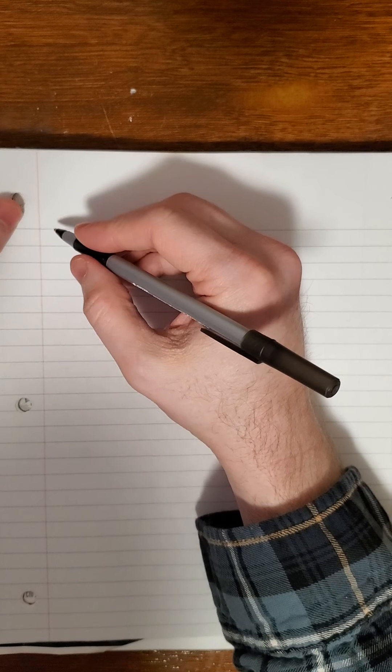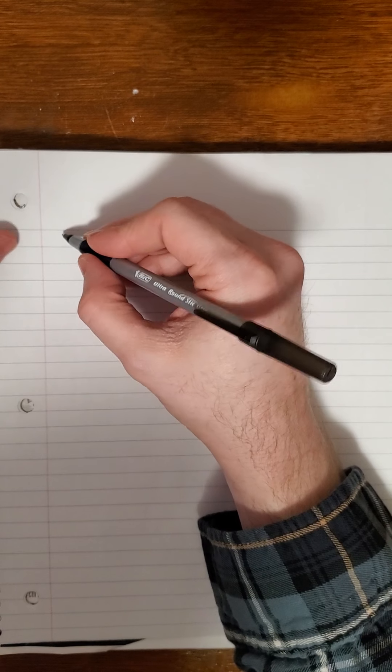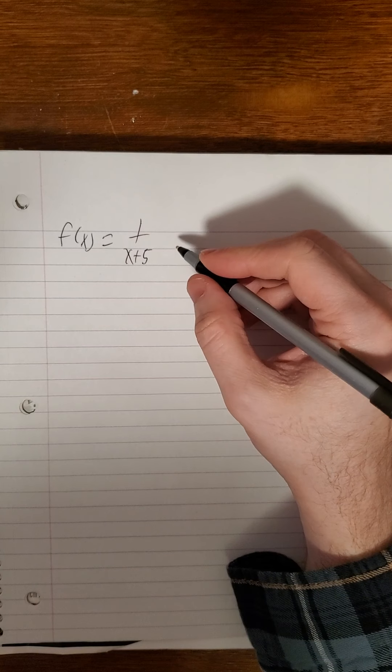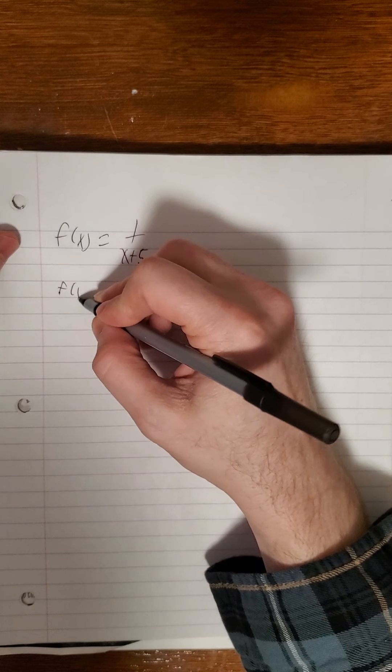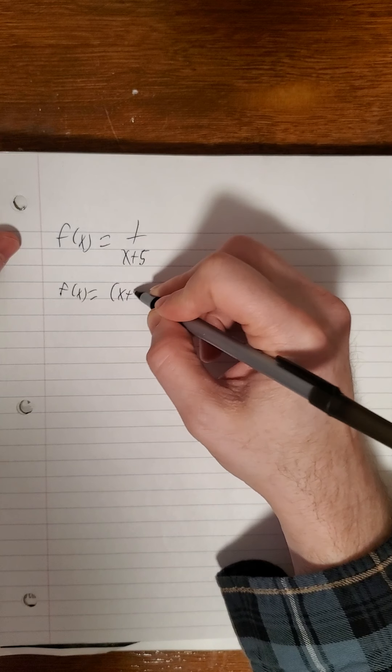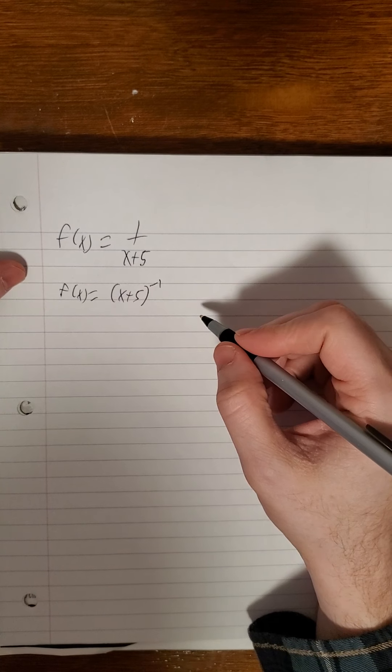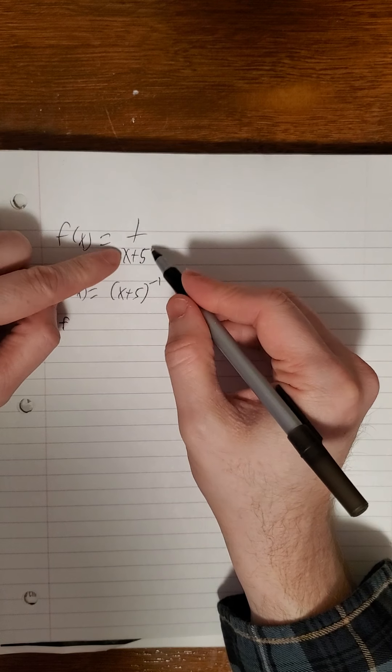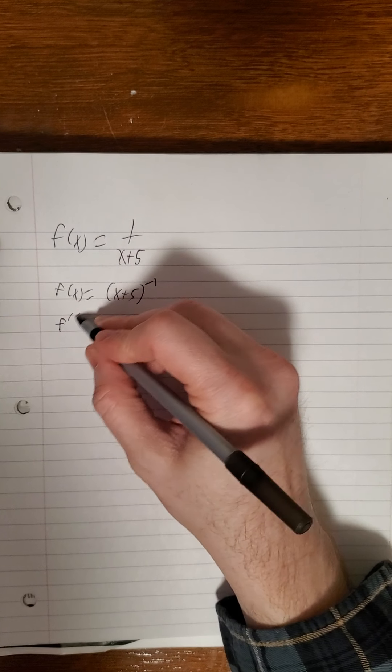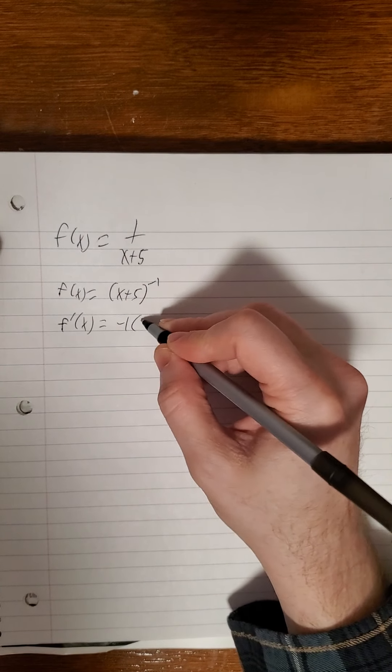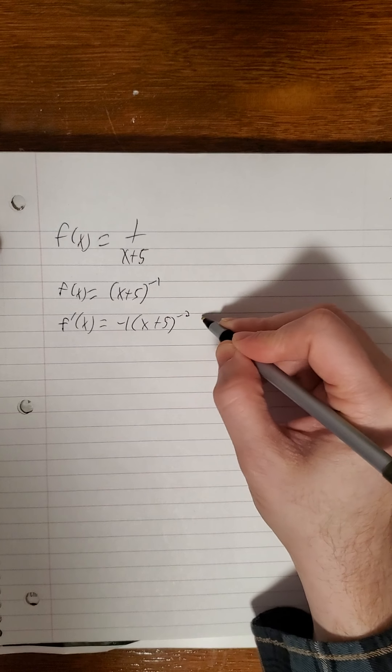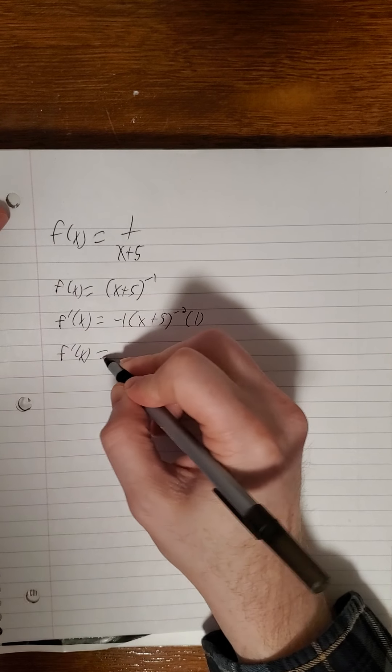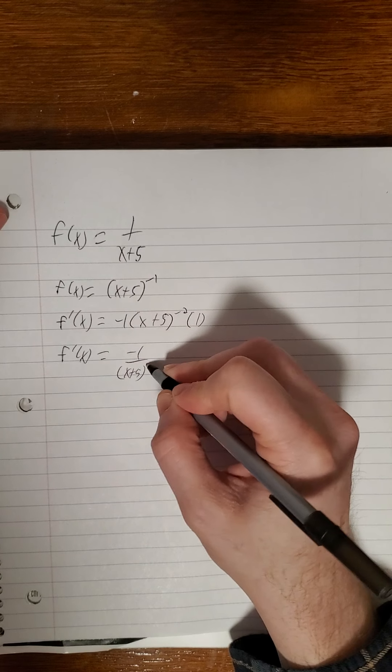One more of these and then we'll get to our first derivative test. Look at f of x is a reciprocal of the sum of x and 5. So if I want to differentiate that, it would be easier to work with in exponent form. Notice I have not taken the derivative yet. So this is not f prime. I've just manipulated algebraically what that looks like. Now I'm ready to take the derivative. So negative 1, keep the base, subtract 1 from the exponent, multiply by the derivative of the argument. So this is negative 1 over x plus 5 quantity squared.